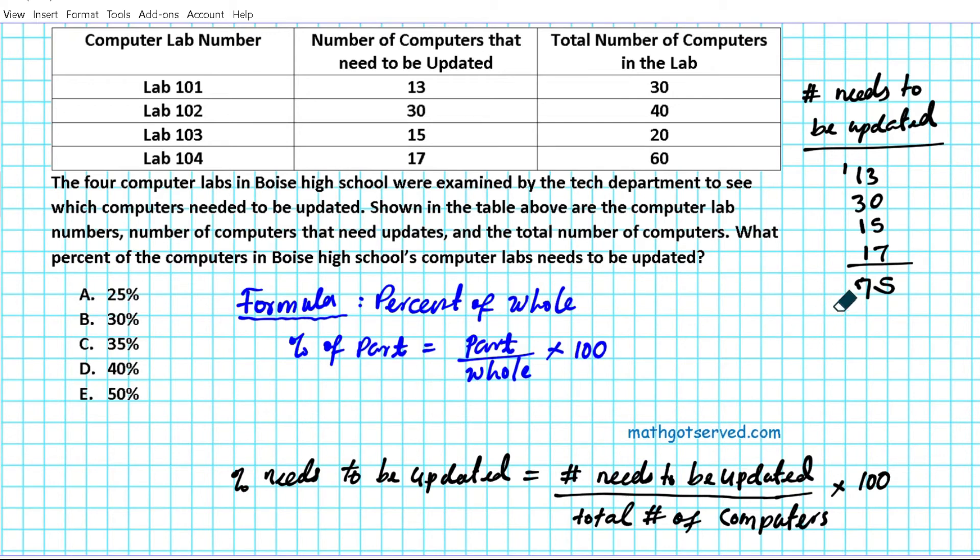And then we also need the total number of computers. What are the total number of computers here? The total number of computers is 30 plus 40 plus 20 plus 60. We'll find the sum. We have six plus four is 10 plus five, that's 15. So there are 150 computers in all.